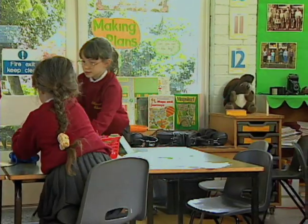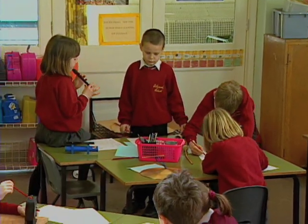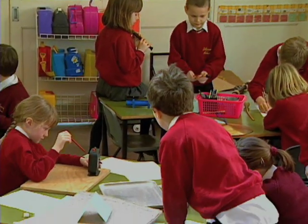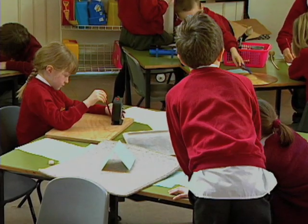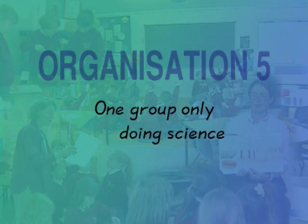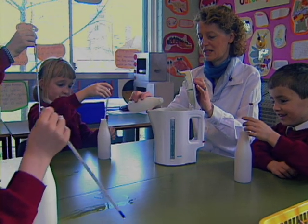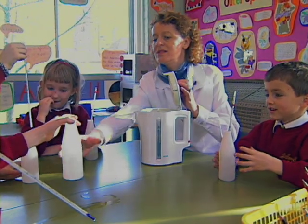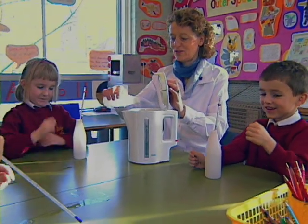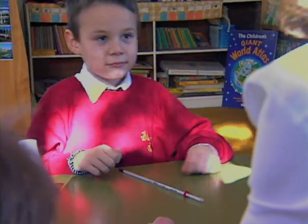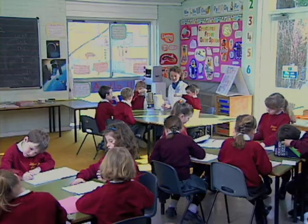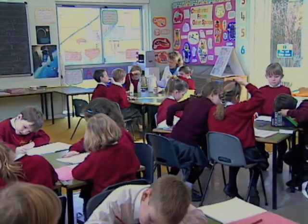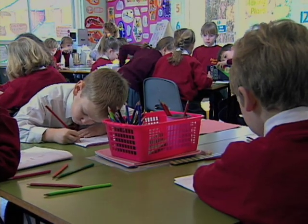As a circus is complicated to plan and carry out successfully, another possibility — if equipment is very limited or needs close supervision — is to have just one group of children doing science. In this case, the teacher is working with the science group to introduce the use of thermometers, while the rest of the class get on with other work that's already been introduced and explained.